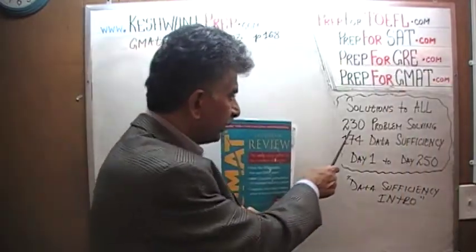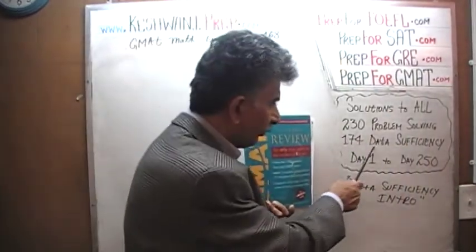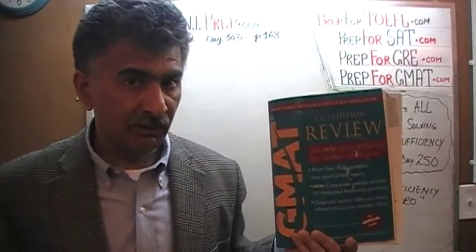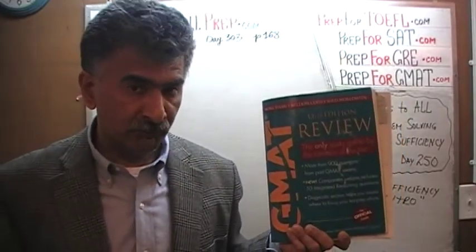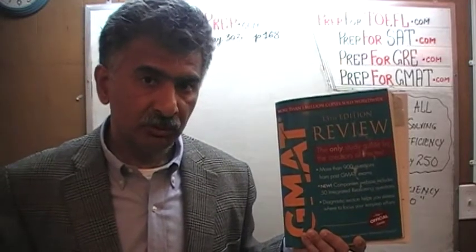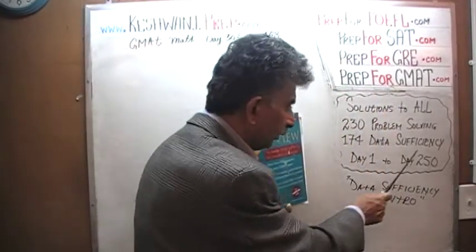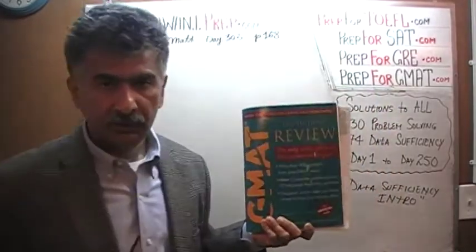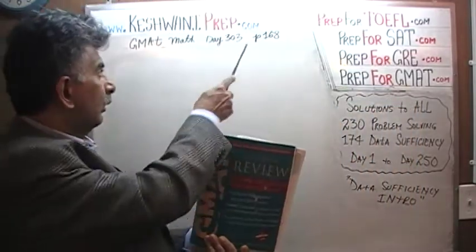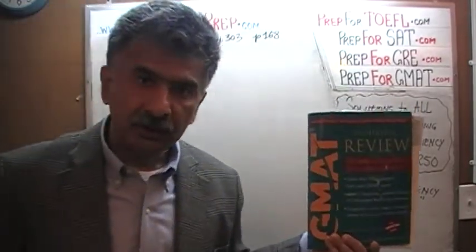The book contains 230 problem-solving questions and 174 data-sufficiency questions. We have already solved every single one of those problems. If you are interested in watching the original solutions, you will find them starting from day number one. Right now we are in the middle of redoing the problems and we are on page number 168. Please turn to it.